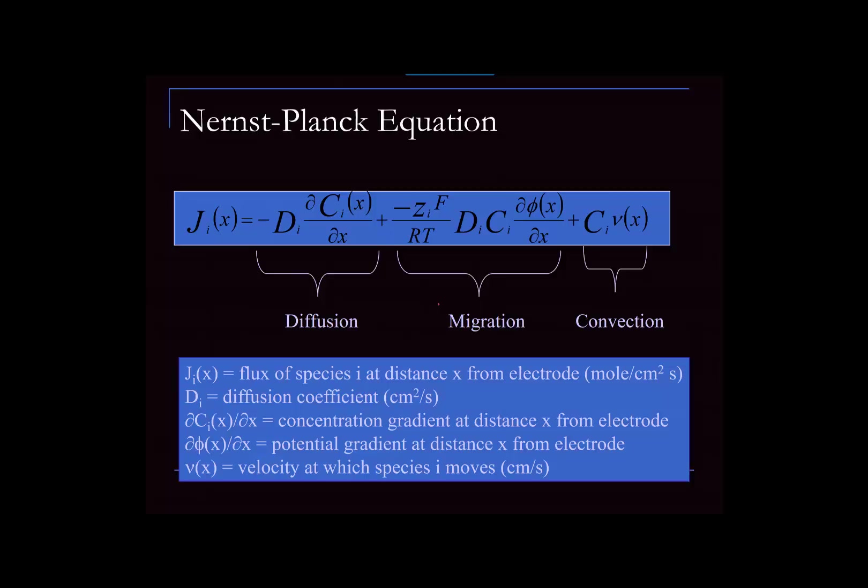Why is all of this important? Because the equation that governs mass transport is known as the Nernst-Planck equation. It has fundamentally three terms, describing the movement of matter due to these three modes of mass transport — the flux, the change in concentration of the species as a function of distance. The problem is that equation is a complex partial differential equation with three different terms that I can't solve. It would be great if I could eliminate one or more terms — and if I could eliminate two, it would actually be analytically soluble.